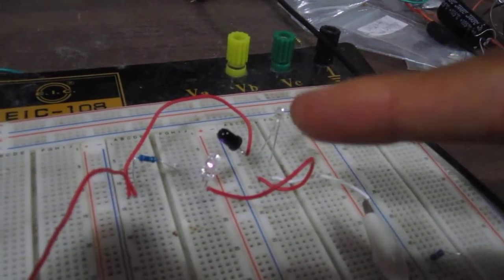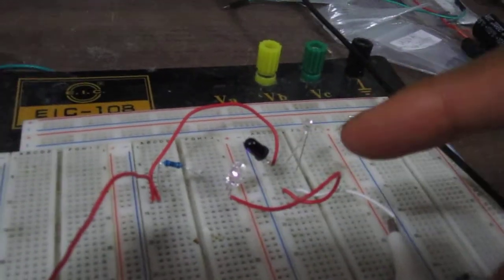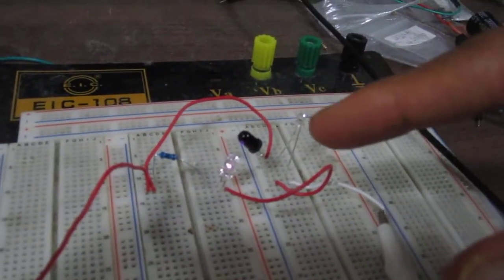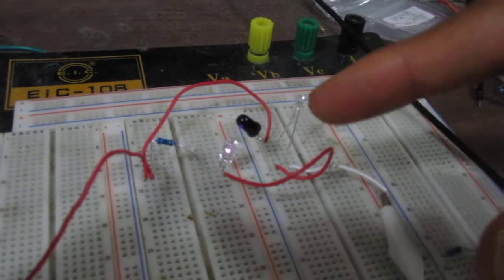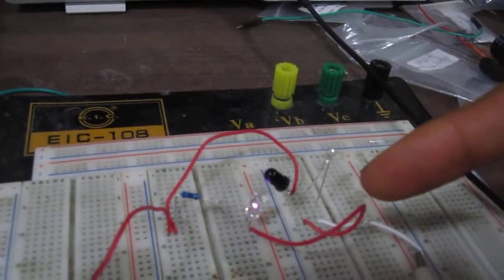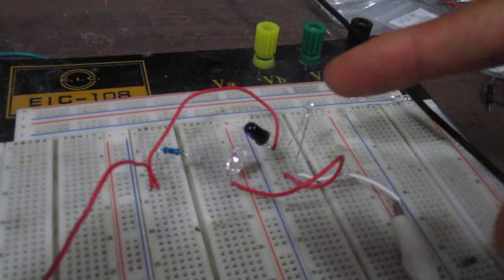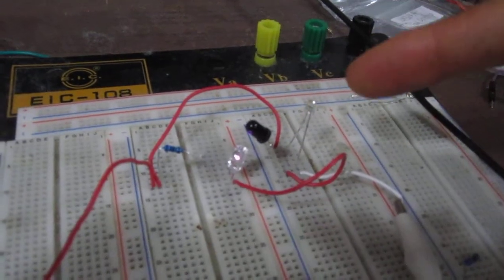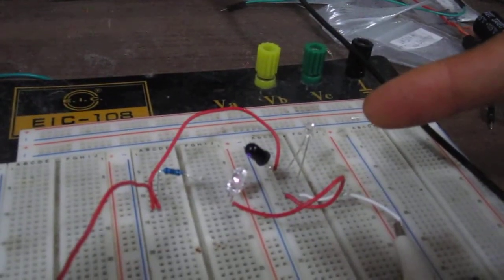When the infrared photo transistor receives infrared light, it's in the on state. Current conducts across the terminals of the transistor and you can see the output—in this case, a blinking LED turns on.